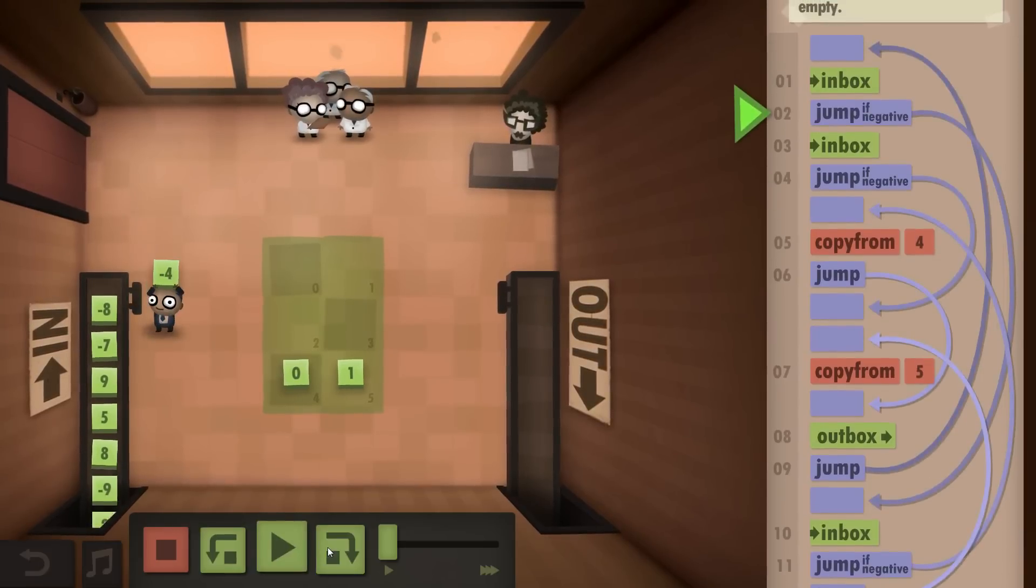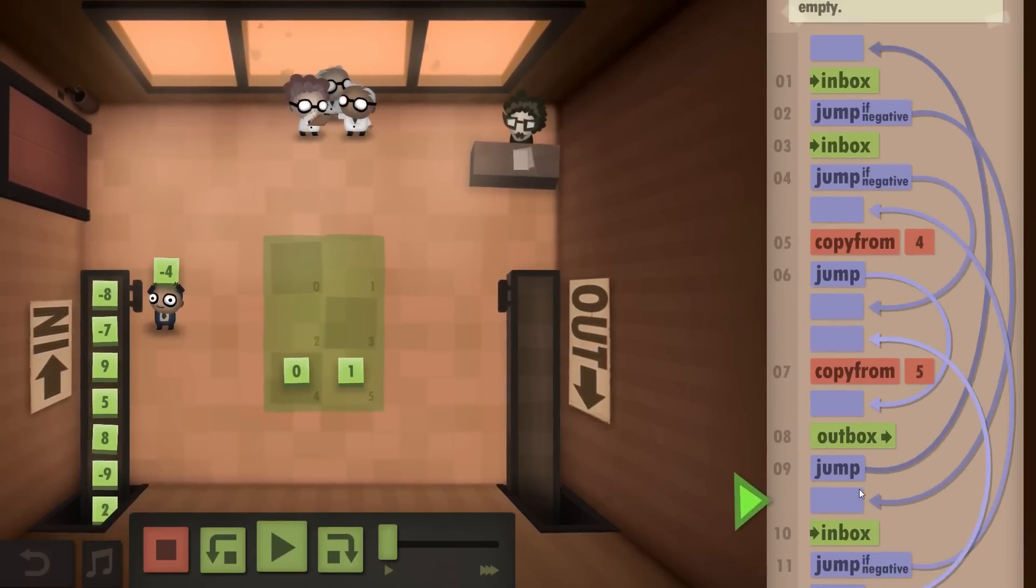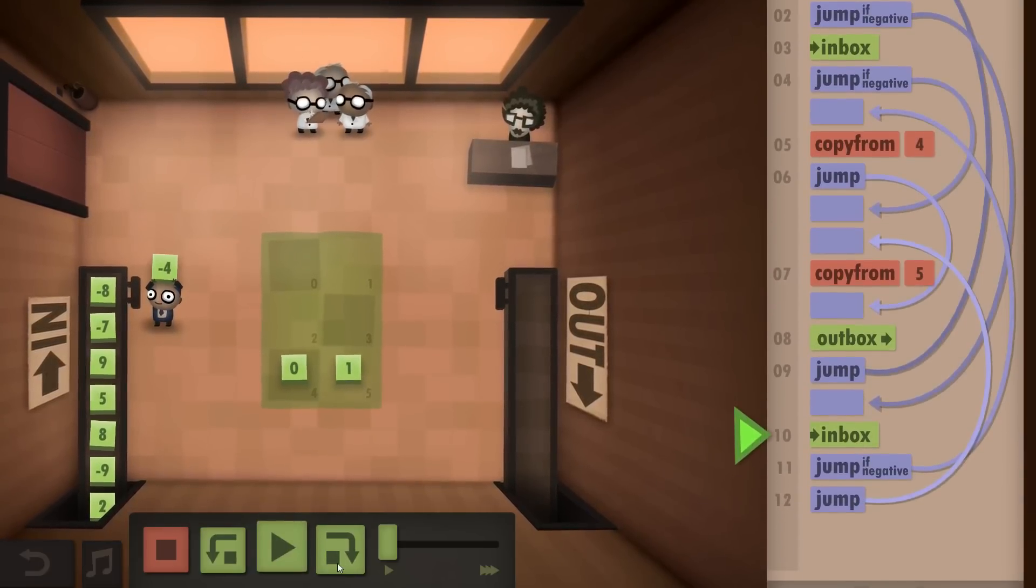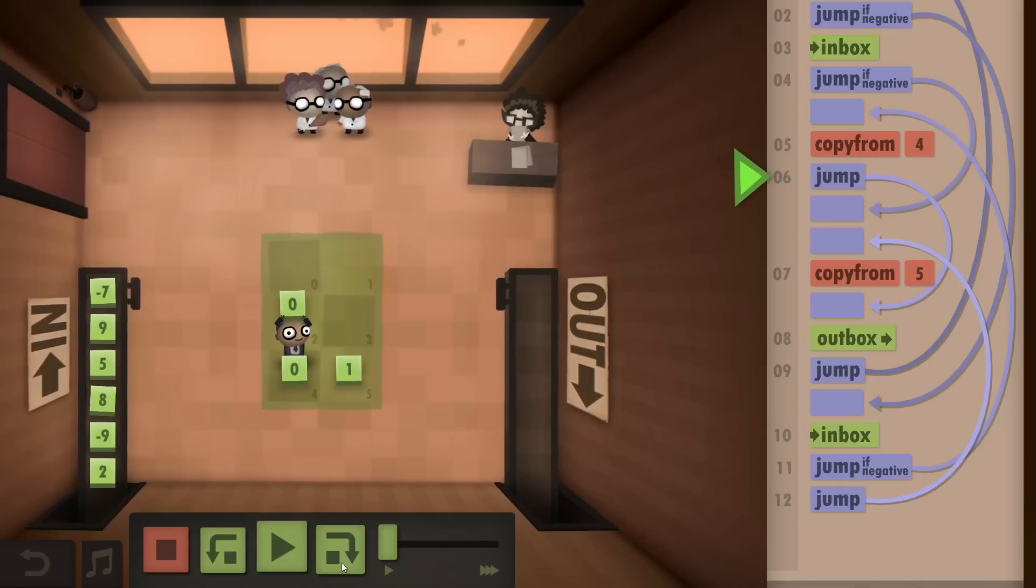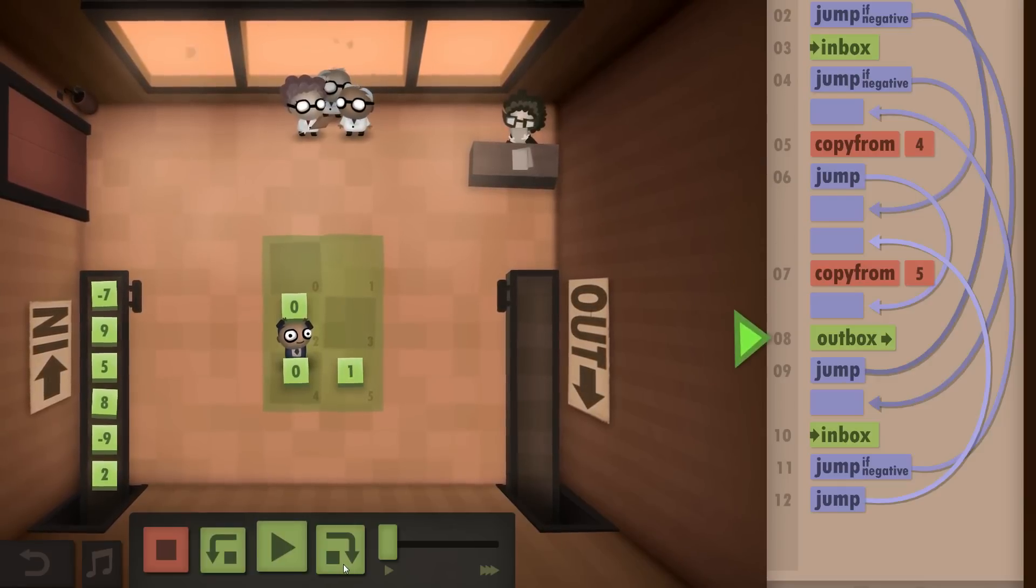We take from the Inbox, it is a negative. So we jump down here, take from the Inbox again. This is also negative. So we copy from 4, which is the 0 for the same sign. And then we jump right to the Outbox.